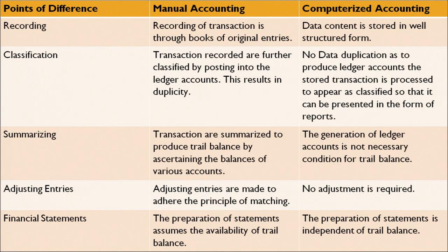Let's now discuss a comparison of how manual records were maintained versus how data is maintained through a computer-aided system. Recording: in the manual process, recording of a transaction is through books of original entries; in the computer system, data content is stored in a well-structured form. Classification: transactions recorded are further classified by posting into ledger accounts, which results in data duplicity; in computer-aided systems, no data duplications are done. Summarizing: in a manual process, transactions are summarized to produce a trial balance by ascertaining the balance of various accounts; however, in a computer-aided system, generation of ledger accounts is not necessarily a condition for preparing a trial balance — the trial balance can be prepared even without generating sub-ledger accounts.